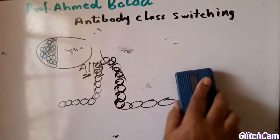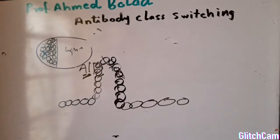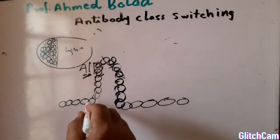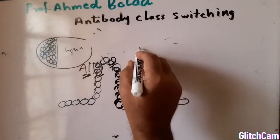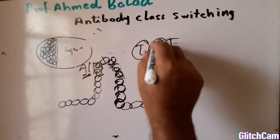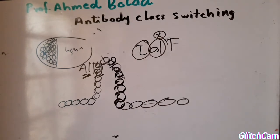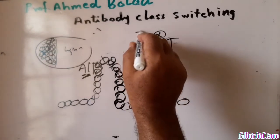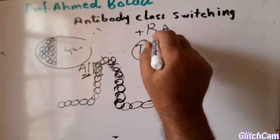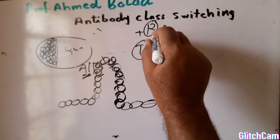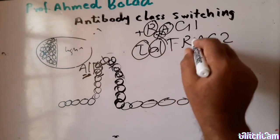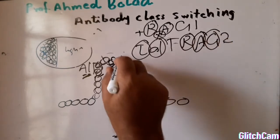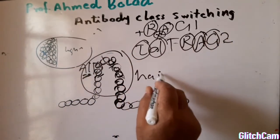As I mentioned, messenger RNA has the capacity to fold into three-dimensional structures. An enzyme known as TDT, terminal deoxynucleotide transferase, together with RAG1 and RAG2, recombination activation genes 1 and 2, will act on this hairpin loop.